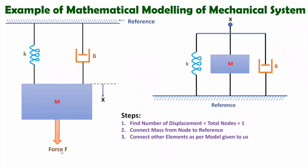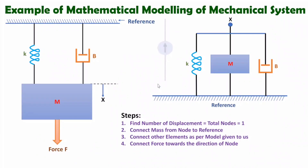In the fourth step, we connect the incoming force. The incoming force is connected at node x, and when plotting force you need to draw it from the reference toward the node. So here we have force directed from the reference toward node x. That is how we complete the equivalent model.